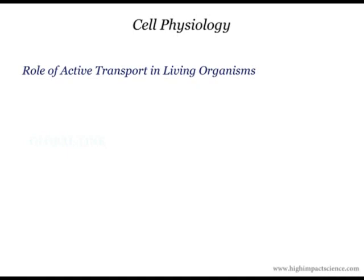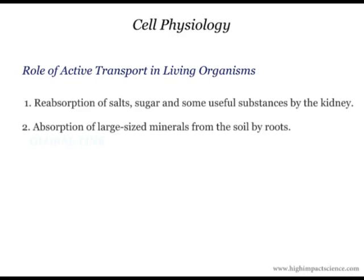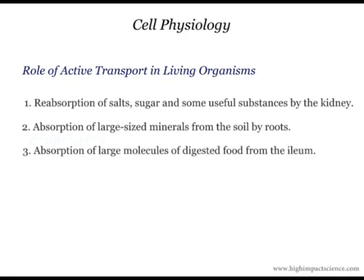The role of active transport in plants and animals. Active transport is involved in the reabsorption of sugar and some salts by the kidney. Useful substances are also reabsorbed back into the bloodstream from the kidney tubules by active transport. It is also used in the absorption of some mineral salts from the soil by roots. Active transport is also responsible for the absorption of digested food from the alimentary canal of animals into the bloodstream — these are the large molecules that cannot diffuse across the thin epithelium. Finally, it is involved in the excretion of waste products from body cells.